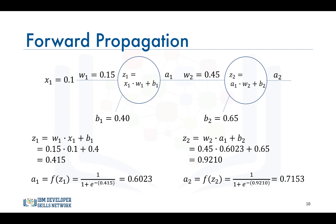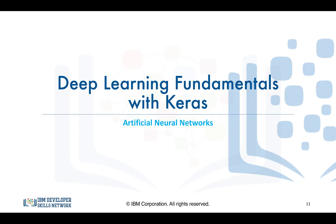No matter how complicated the network gets, it is the same exact process. To summarize, given a neural network with a set of weights and biases, you should be able to compute the output of the network for any given input. In the next video, we will start learning how to train a neural network and optimize the weights and the biases.